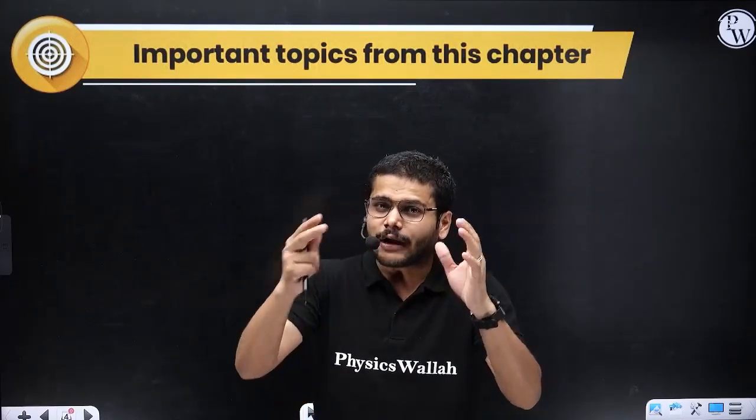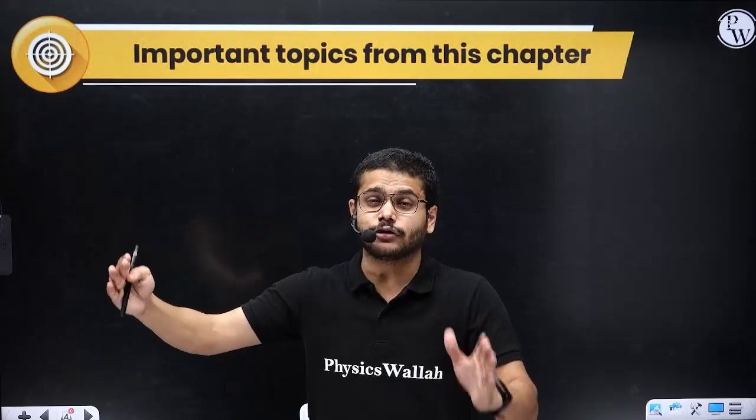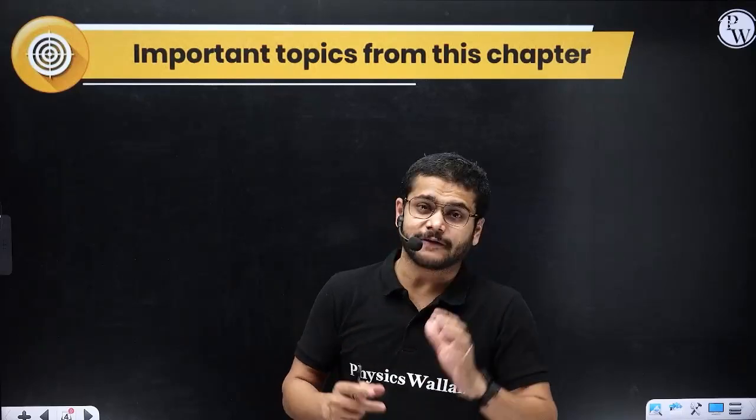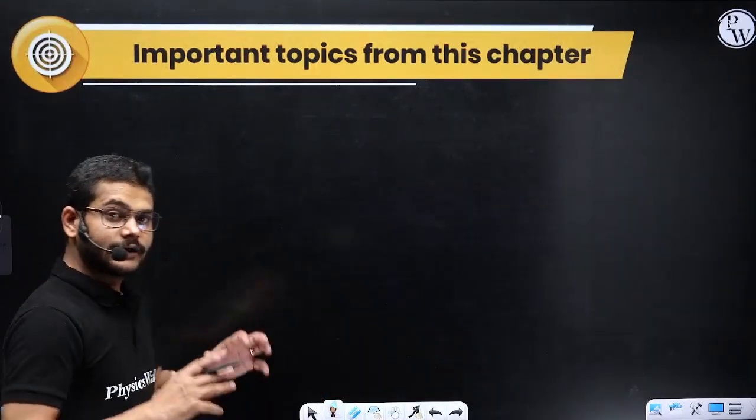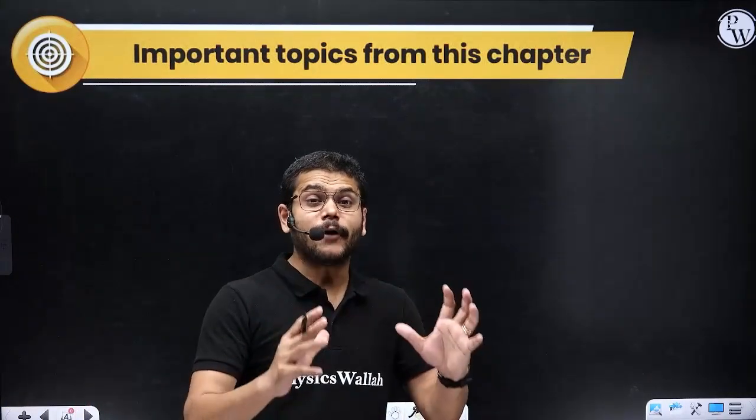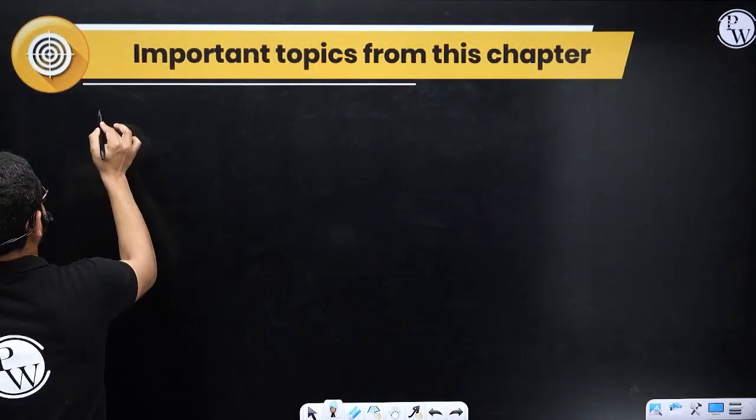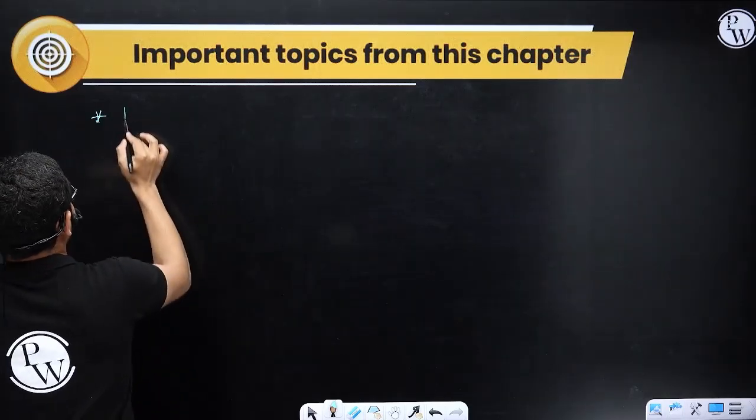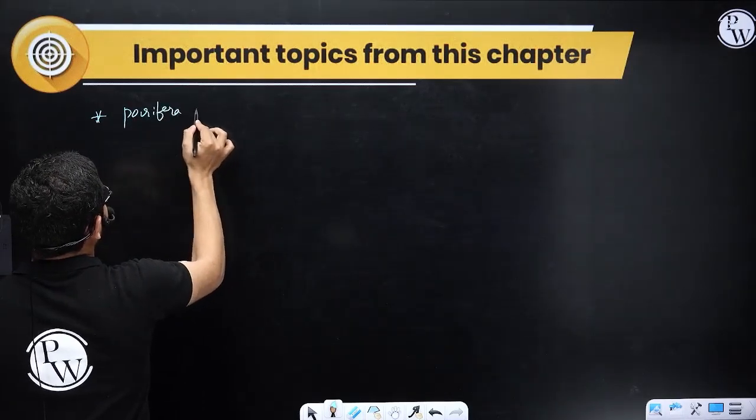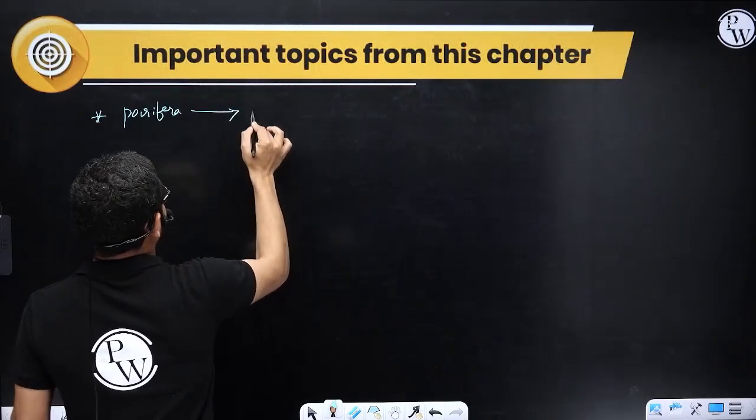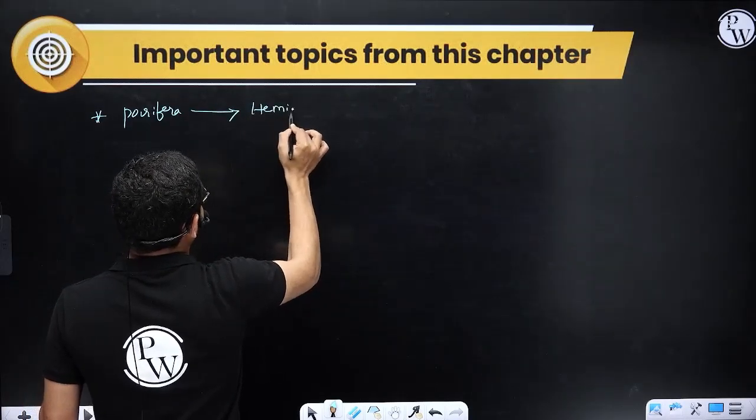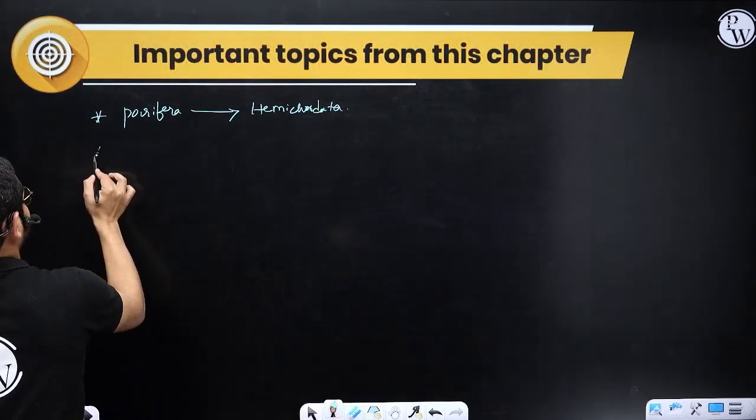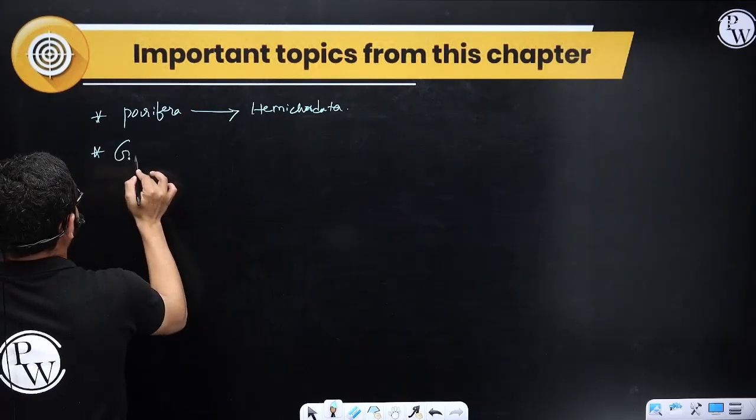First thing, Animal Diversity 1 and Animal Diversity 2 are memory-based topics. You need to know which animal group and be able to compare them. So we can get more score from this topic. Next, the important topics I recommend: first thing, for most of the phylums, for example, phylum Porifera, you need to know till Hemichordata.